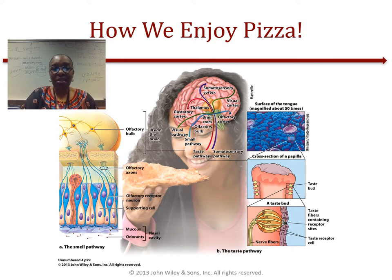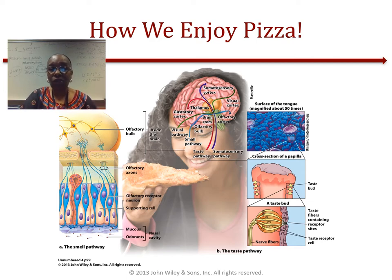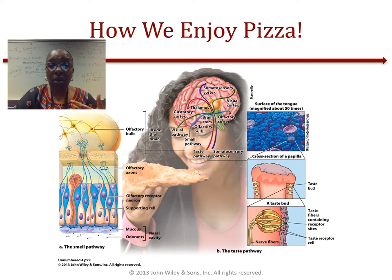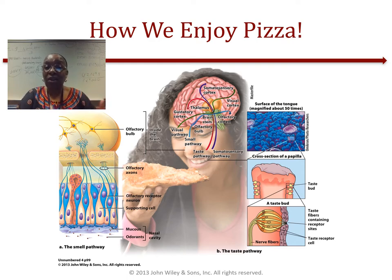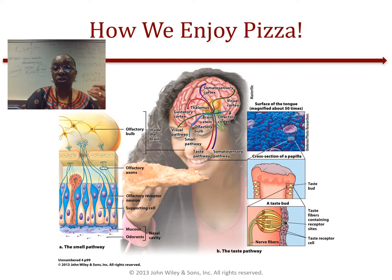Looking at the smell pathway: olfactory receptor neurons — shown in blue on the slide — transduce information from odorant molecules in our nose, and those nerves carry that information to the brain where the synapses and olfactory bulb are. For the taste pathway, when we eat and drink, liquids and dissolved foods flow over the papillae into pores leading to the taste buds, which contain taste receptors. Those nerves then carry information to the brainstem, the thalamus, the gustatory cortex, and the somatosensory cortex.